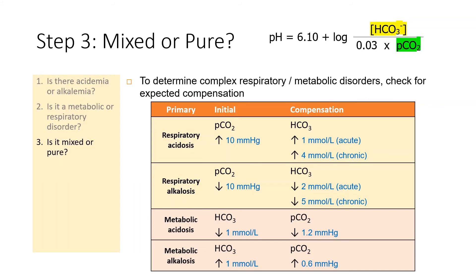In step three, we have to decide if it is a mixed or pure disorder. We return to the Henderson-Hasselbalch equation, which has a fixed mathematical relationship between pH, bicarbonate, and pCO2. To determine if there is a complex or mixed respiratory-metabolic disorder, we check for expected compensation. If the primary condition is respiratory acidosis, pCO2 will be elevated, and for every 10 mmHg increase in pCO2, the kidneys compensate by increasing bicarbonate — by 1 mmol/L in acute respiratory acidosis, and by 4 mmol/L in chronic respiratory acidosis.